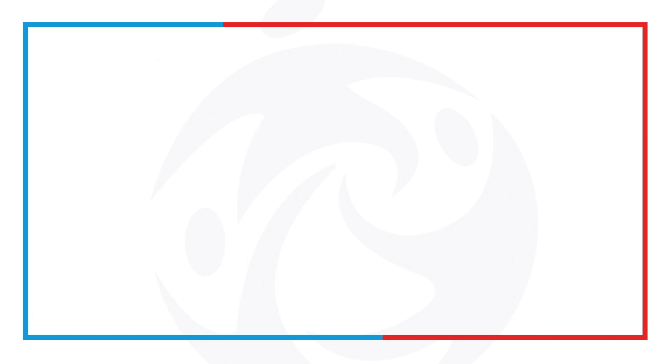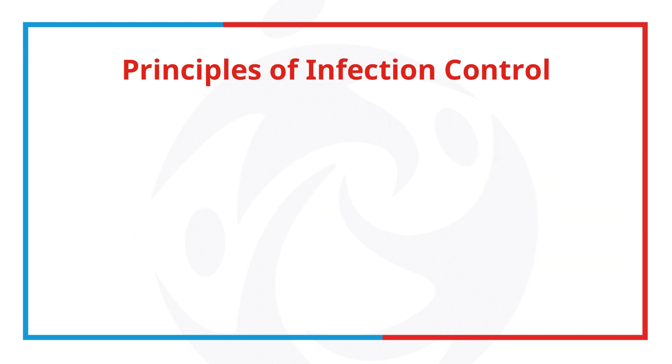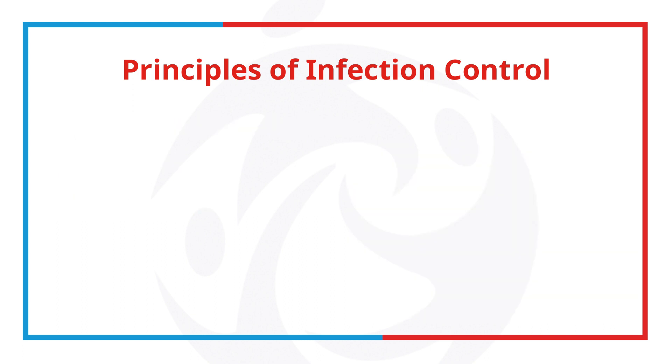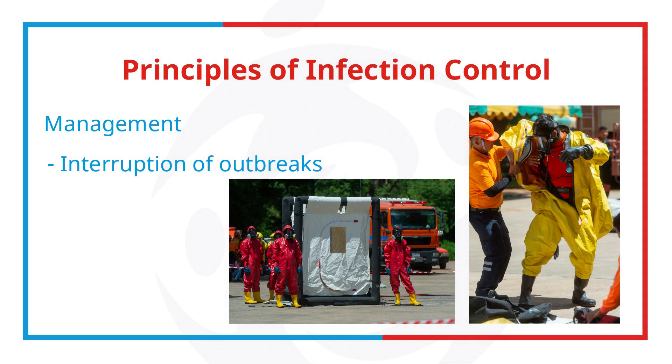The principles of infection control encompasses the following: Number one, prevention, which comes with hand hygiene, cleaning, disinfection, sterilization, and vaccination. Second, monitoring and investigation, which includes surveillance and source tracing. And number three, management with the interruption of outbreaks with the help of multiple agencies and local agencies involved in infection prevention.